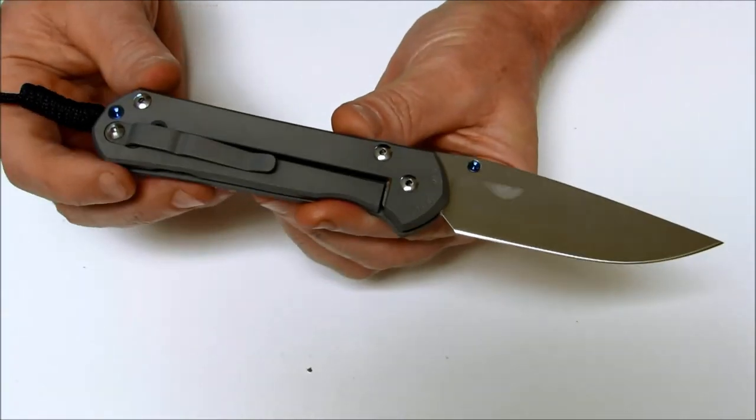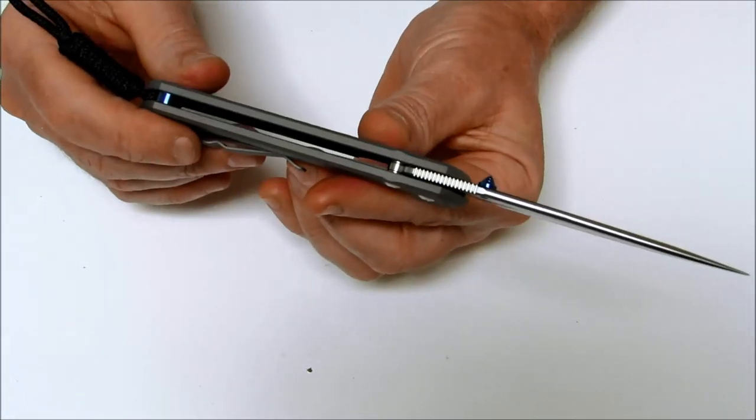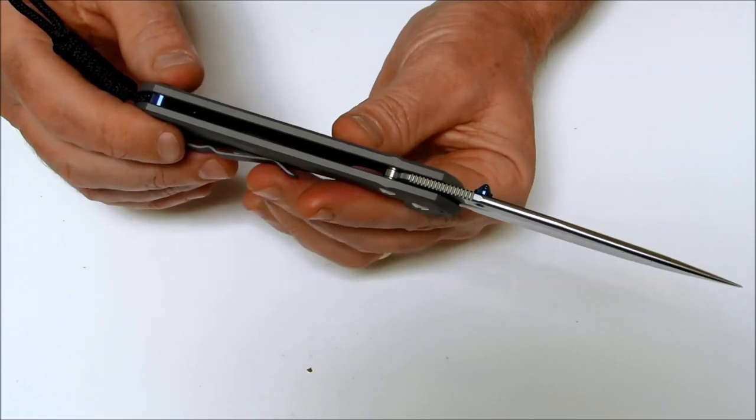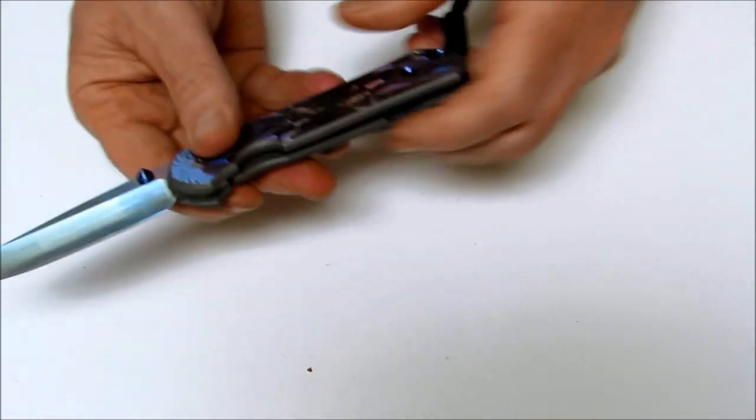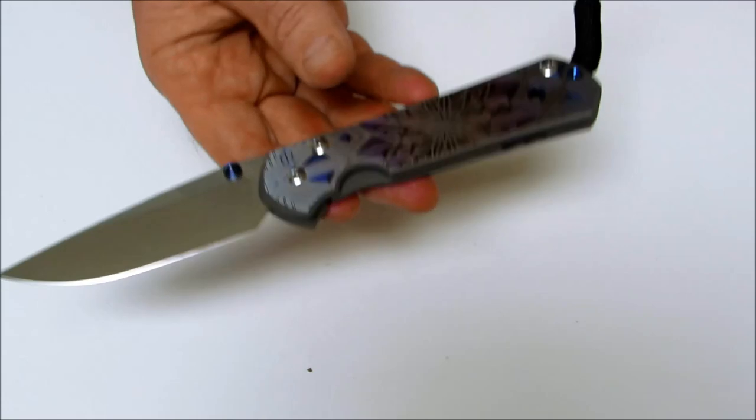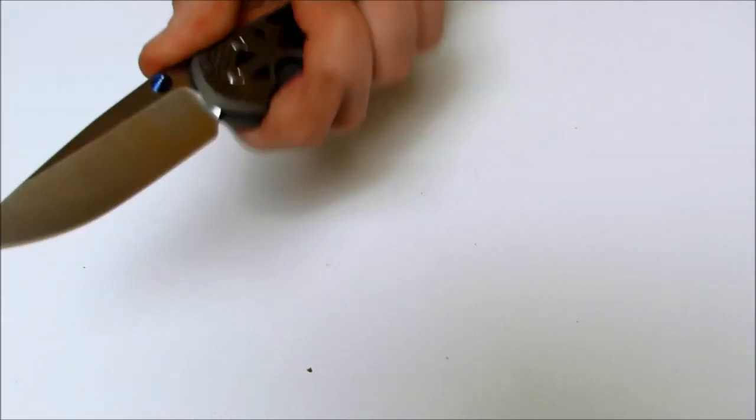Handle length 4.71 inches. The handle thickness is 0.46 inches. The handle is titanium. The weight is 4.7 ounces. It's very light for a titanium full size folder.